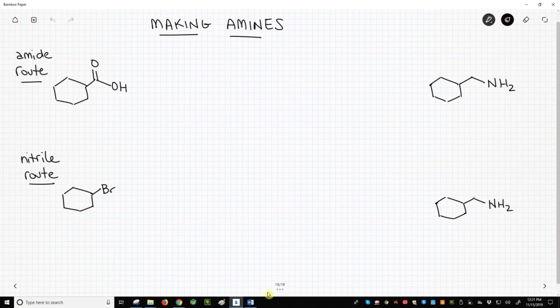The amines, both the same, we want to make are on the far right of the screen and the respective starting materials are on the far left. The first synthesis starts with a carboxylic acid.